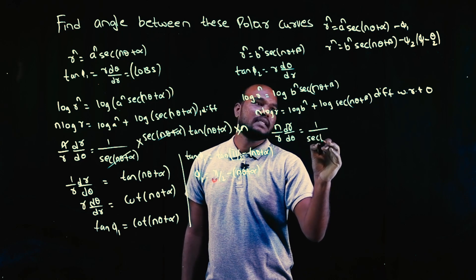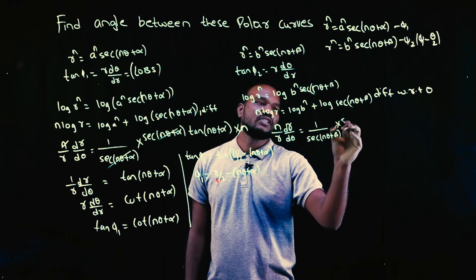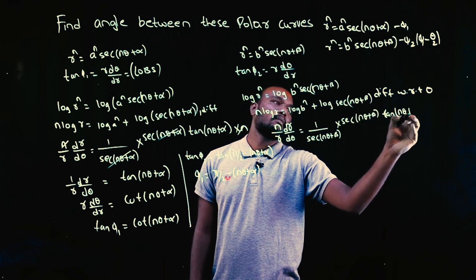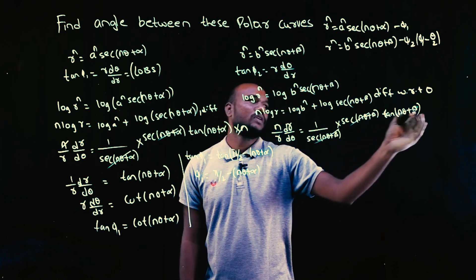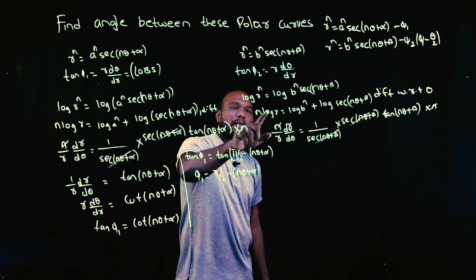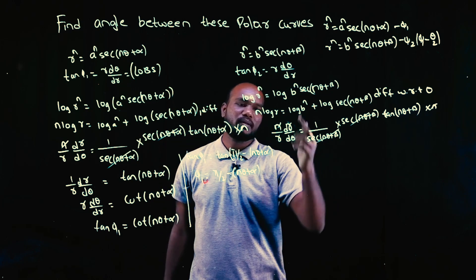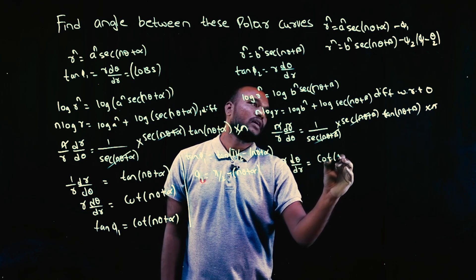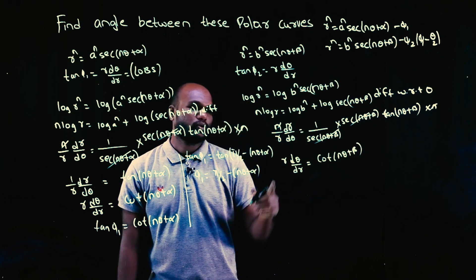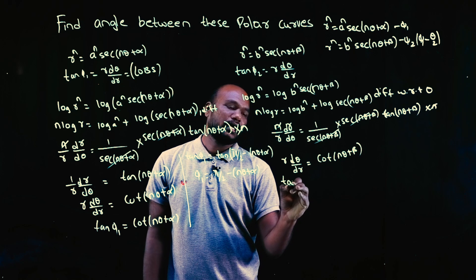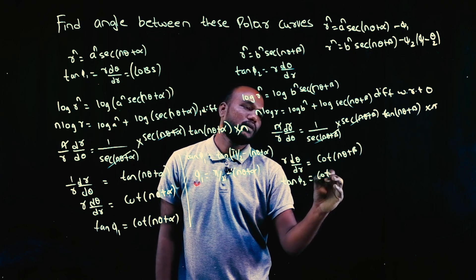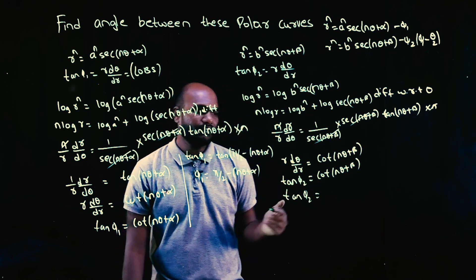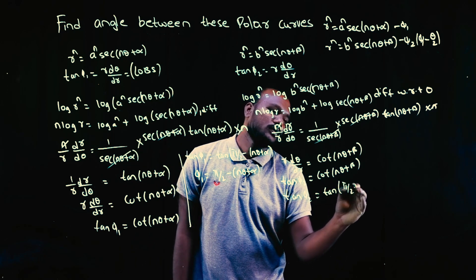The differentiation of log(sec(nθ+β)) gives (1/sec(nθ+β)) · sec(nθ+β)·tan(nθ+β) · n. The n's and sec terms cancel. So (1/r)·(dr/dθ) = tan(nθ+β). Flipping it, r·(dθ/dr) = cot(nθ+β), therefore tan φ₂ = cot(nθ+β).